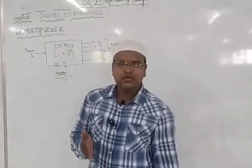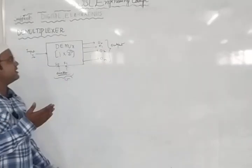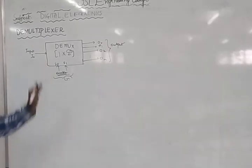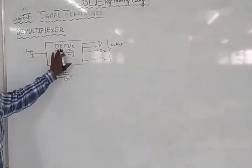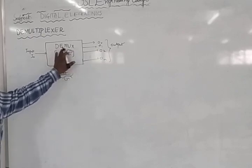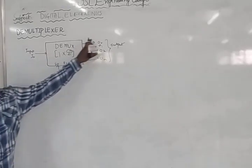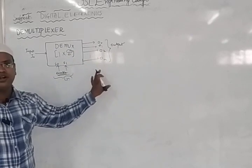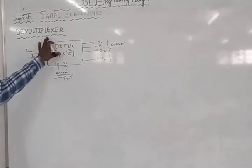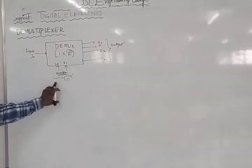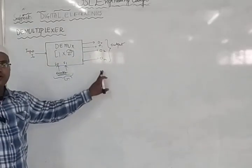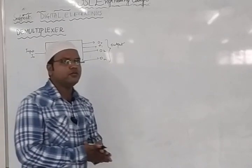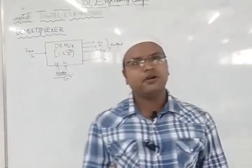The demultiplexer operation is quite similar to a decoder. In summary, DEMUX takes a single input and produces N number of outputs. Based on the select or enable inputs, the output line is chosen. It is essentially the reverse of a multiplexer — whatever combination comes in through I0 is routed to the selected output line.